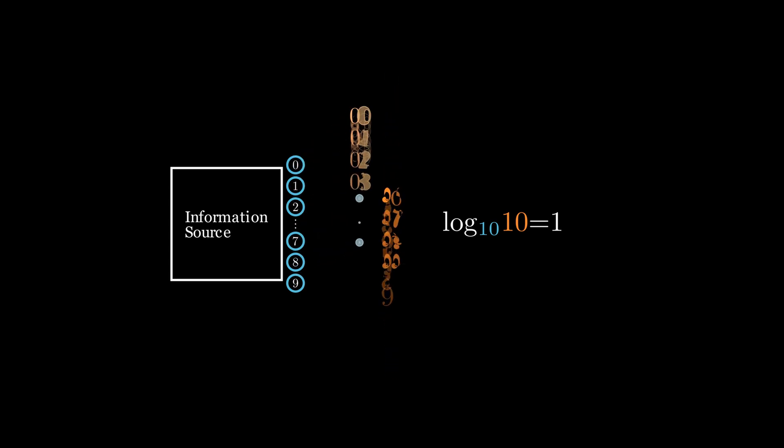Using it again, we increase our possible states to 100, giving us 2 decimal digits of information. And the same scenario works when our source is sending binary digits instead.